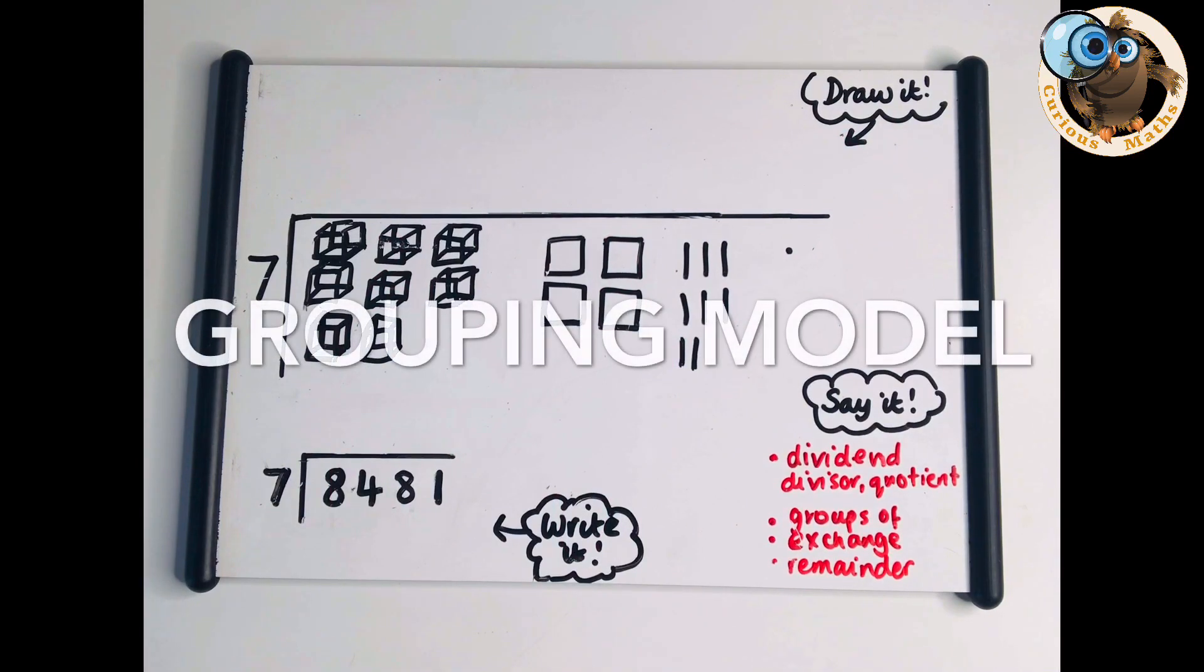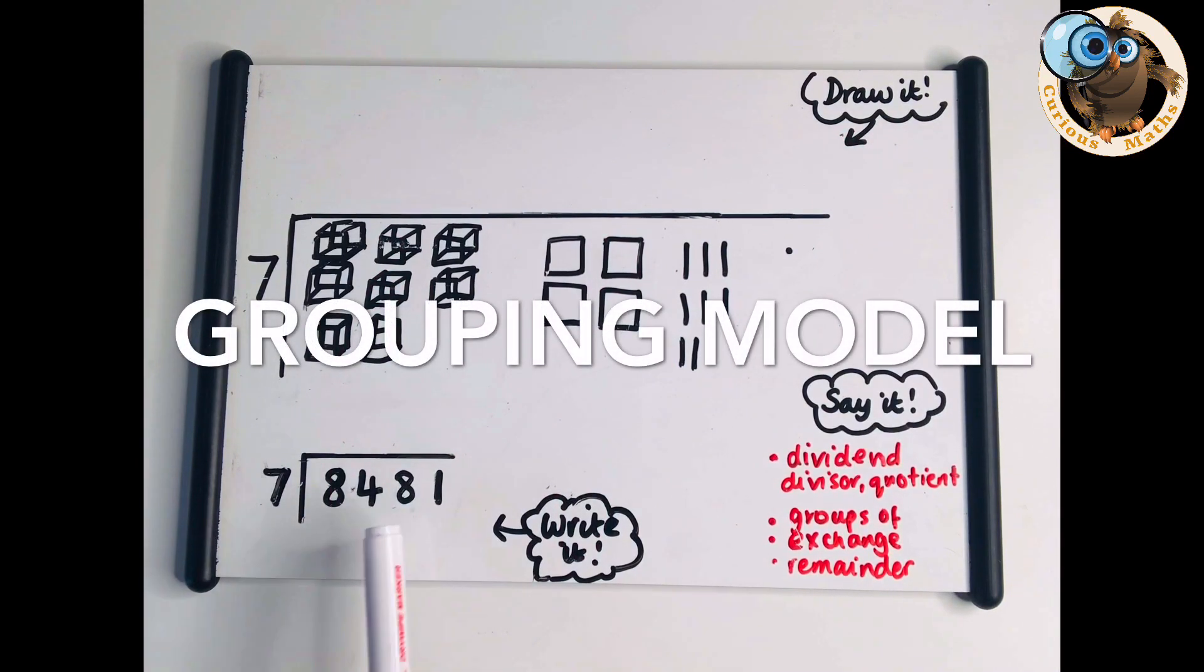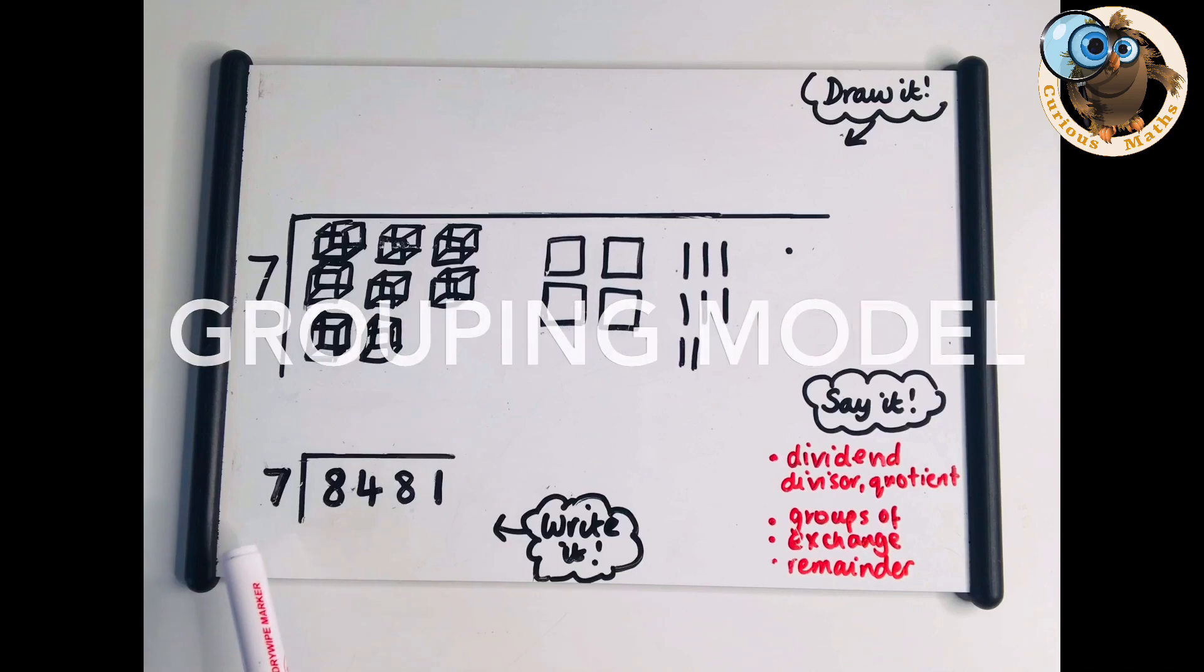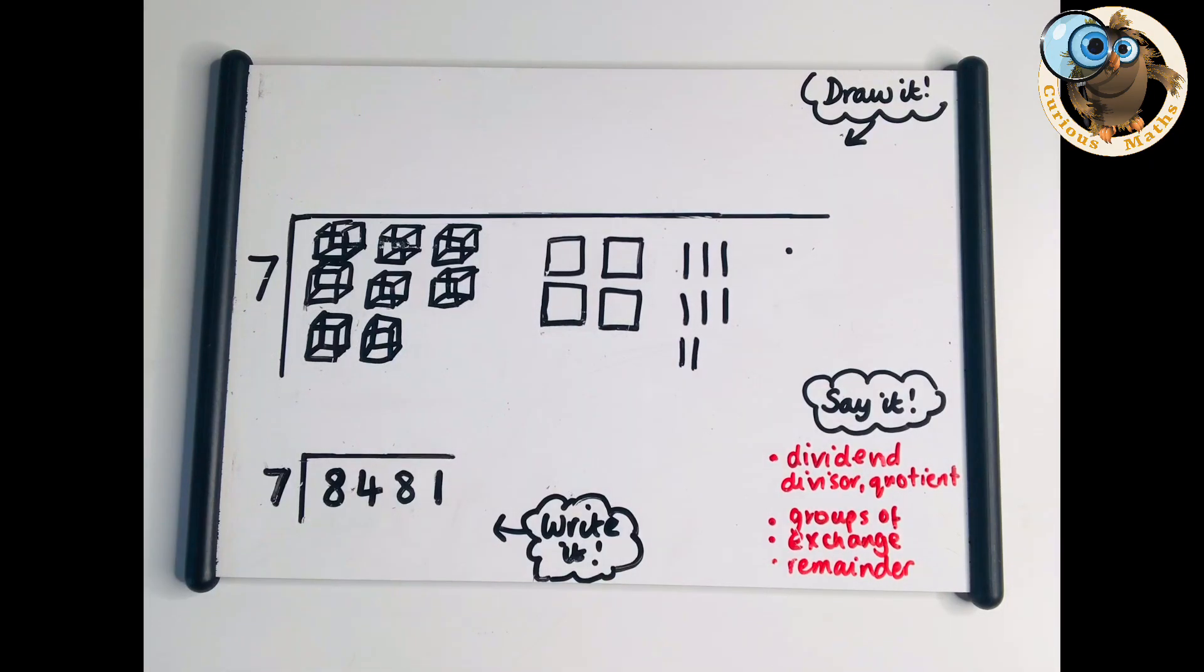This question is more tricky than the last one. We've still got our four digit dividend by a single digit divisor. But in this example there's going to be some exchanging and a remainder. I think I'd probably do a very small amount on the build, perhaps model using Math Spot or Toy Theatre from the front. Maybe let children do one together in pairs, then move to the draw.